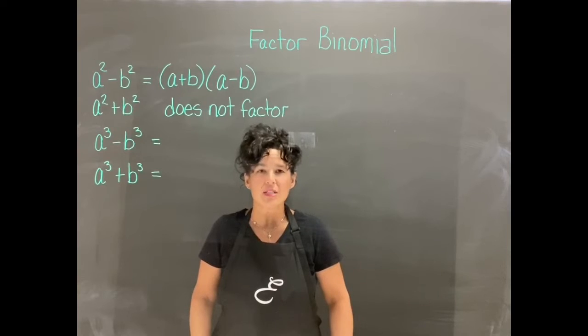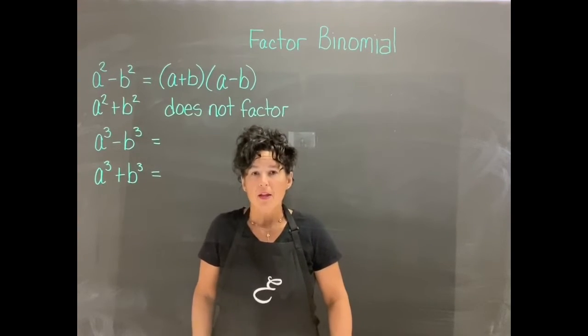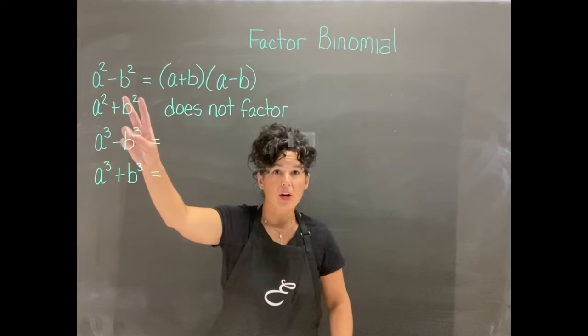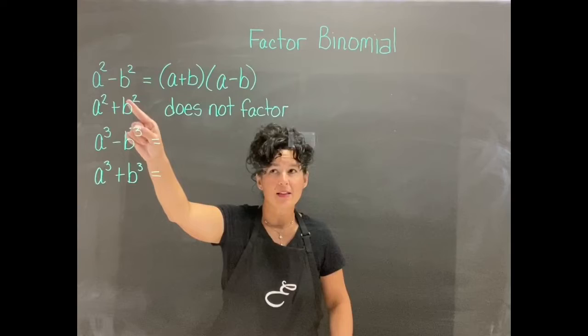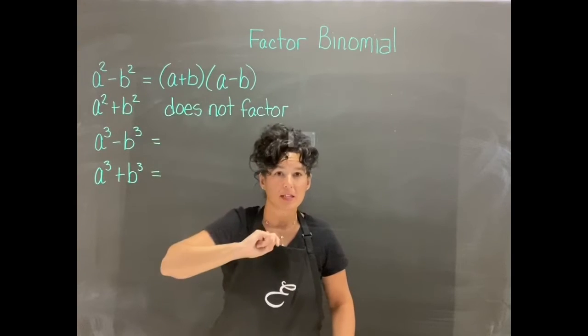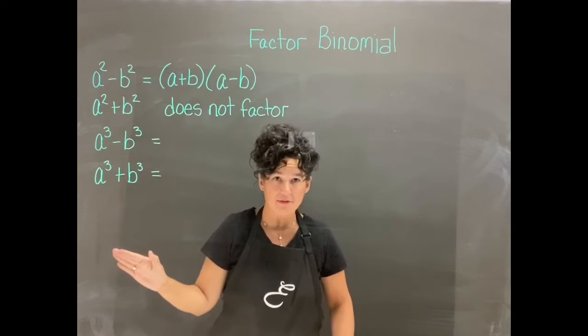It's 17. We don't use times one in factoring, so it would just be prime. Alright, so if you have a perfect square at the beginning and at the end, if there's a minus in the middle, we have a plus b times a minus b. And if there's a plus in between, it does not factor.